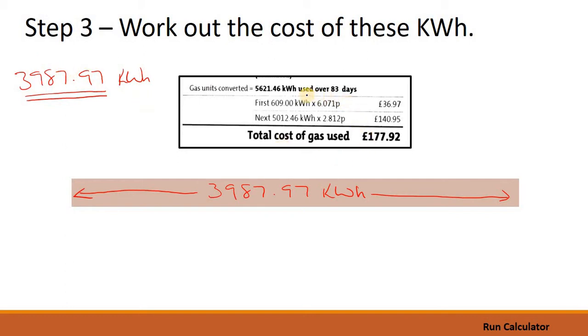What the pricing structure tells us is that our kilowatt hours—in this case it was 5,621.46 but remember, we've only used this many. But because the pricing structure hasn't changed it tells us that it's going to be broken up into two bits. And the only thing that's certain is the first 609 kilowatt hours that we've used will cost us £36.97. So let's just imagine that we're going to break this up into two bits. There is the first 609 kilowatt hours.